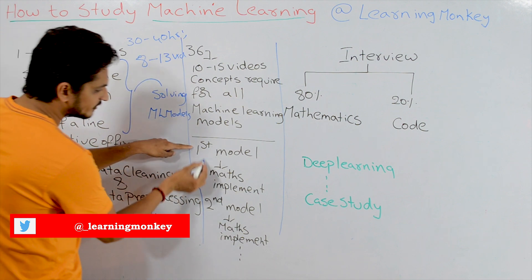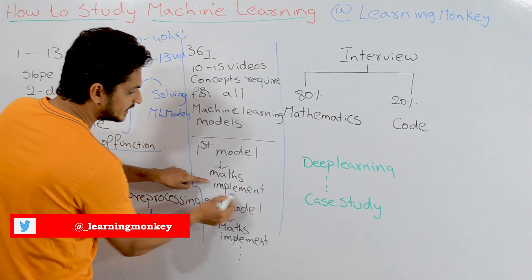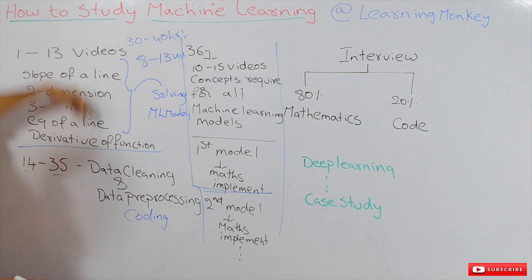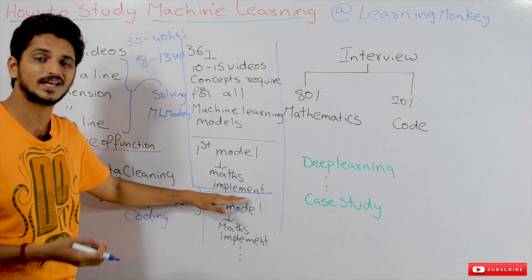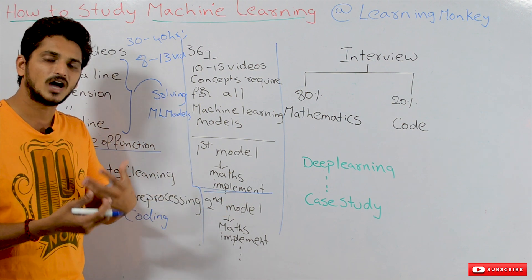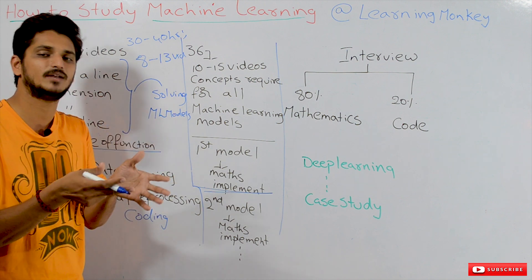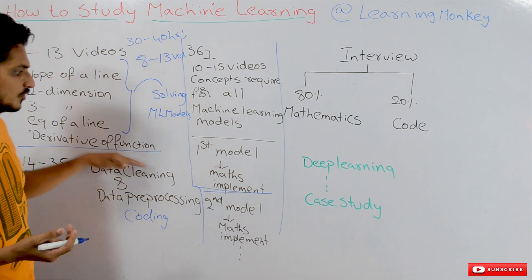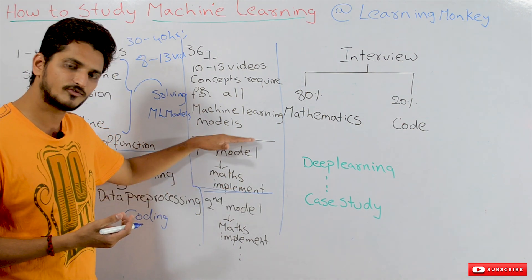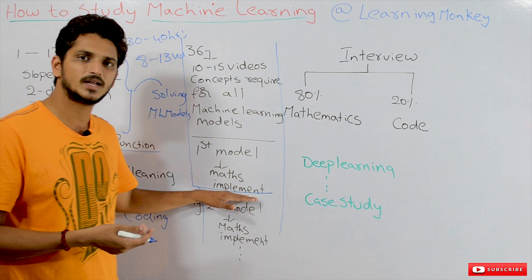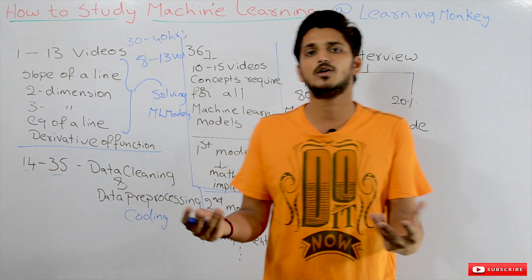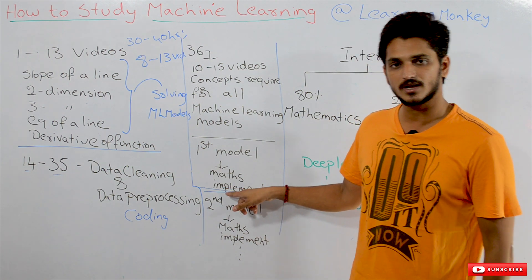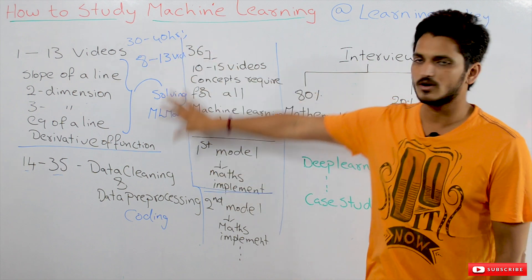After completing the first model — understanding both the mathematics and the implementation — you will get a clear idea of what machine learning is and how to study it. All the concepts will come together at this stage. You must have patience to reach this point, but once you do, from here onwards you can fly on your own. You will have a clear understanding of how to study machine learning and how to get placed in the domain of machine learning.